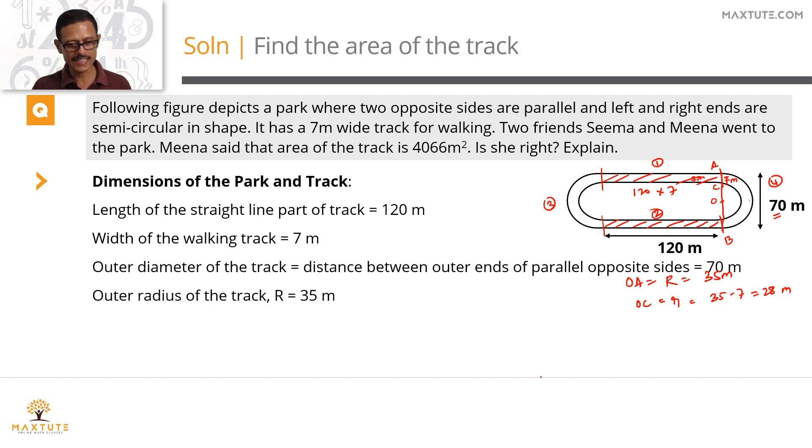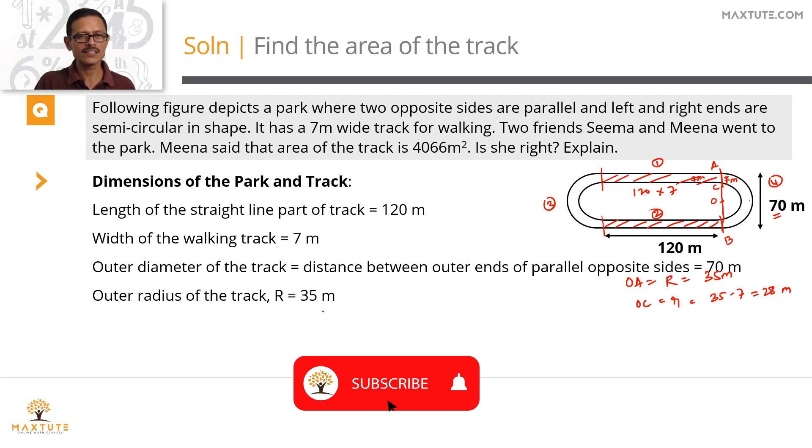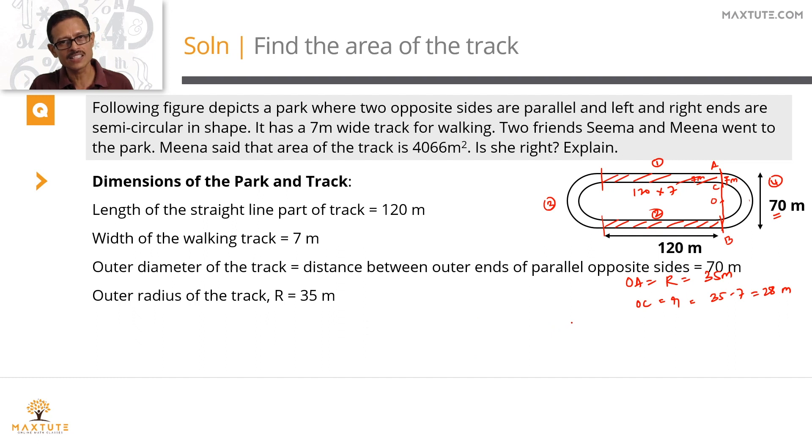Let's get both those data in a printed form. Outer diameter of the track is the distance between the outer ends of this parallel part which is equal to 70m. So the outer diameter is 70m. Outer radius capital R is equal to 35m. The width of the track is 7m. Therefore the inner radius is 35 minus 7 which is equal to 28m.